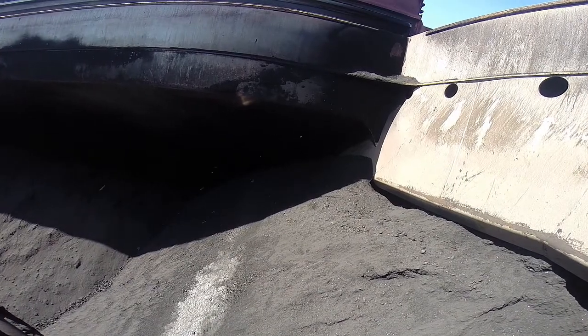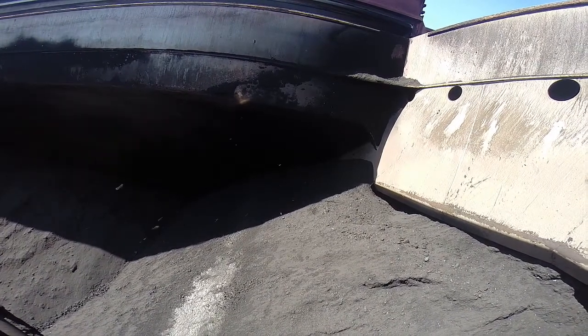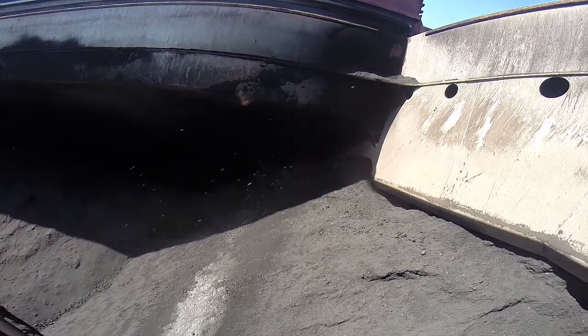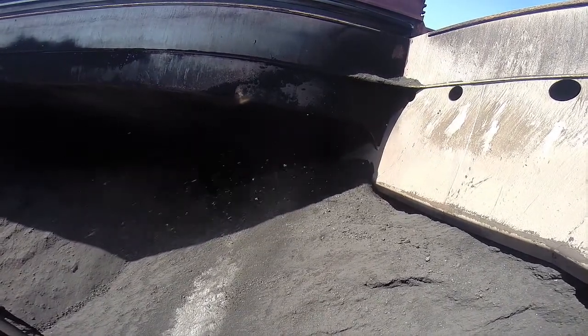Once there is nowhere else to pour the coal without blocking the wings or filling up the center, it is time to use the trimmer. Close your gate, run off the conveyors, then shut down.